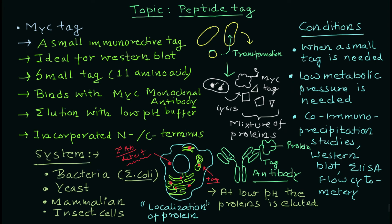In summary, we have discussed the myc tag — what it is, its length of 11 amino acids, and that it is an immunoreactive tag with monoclonal antibodies raised against its peptide sequence. We discussed compatible systems: bacteria, yeast, mammalian cells, and insect cells. We covered how to purify protein from a complex mixture using the antibody-based column, and how changing the pH allows elution of the protein.